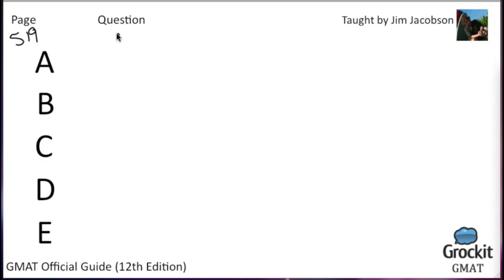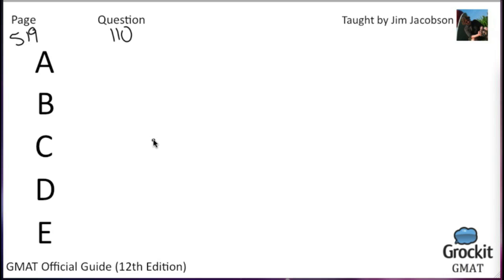Page 519, number 110. Currently measuring the productivity of service workers is complex. Consider postal workers: they are often said to be more productive if more letters are delivered per worker. But what if more letters are lost or delayed per worker at the same time? The objection applied to the productivity measure described is based on doubts about the truth of which statement? The question is asking: which answer choice is the general statement that the passage provides a good objection to?